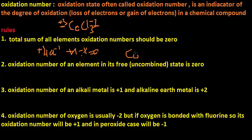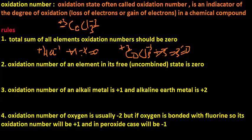Another example: in cobalt chloride, chloride has minus three and cobalt has plus three oxidation numbers, and if you take their sum it is also zero. This is rule number one.